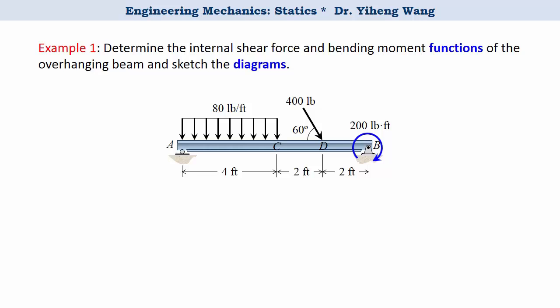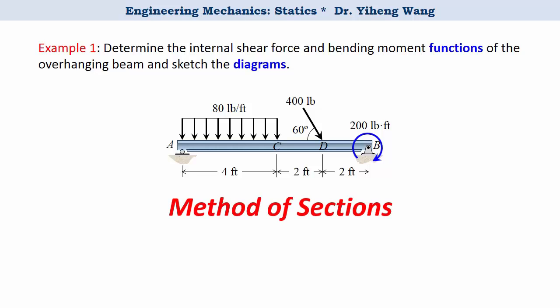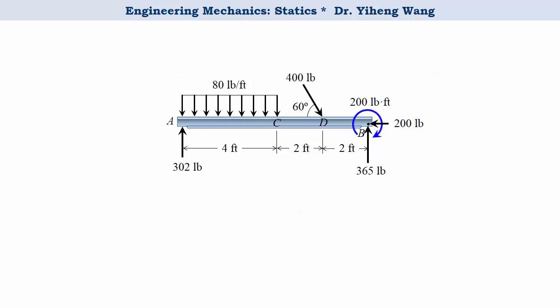We have already learned the method of sections. Therefore we will cut the member at an arbitrary location x and apply the method of sections to write the shear force and bending moment as expressions of x. The first thing we do is complete the free body diagram by determining all the external support reactions. Although you can choose either side when applying the method of sections, solving all support reactions is advantageous because it lets us double-check our diagrams. Therefore I encourage you to always solve for all external support reactions.